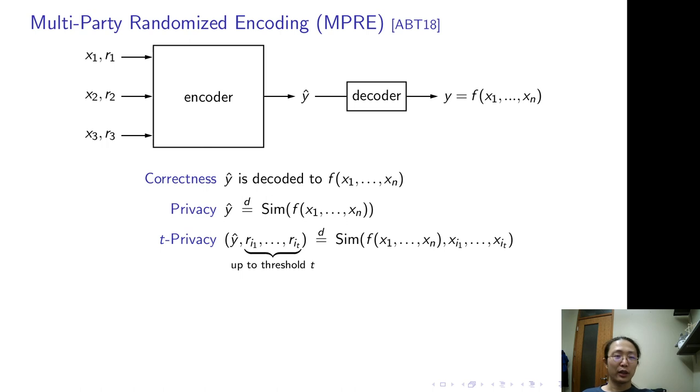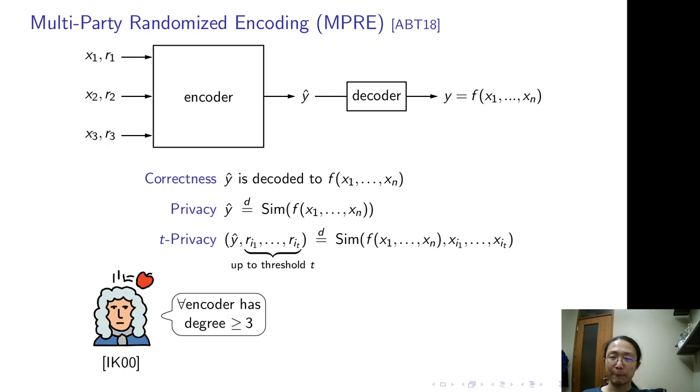We want to construct a round-optimal MPC, so we hope the encoder has low degree. Unfortunately, Ishai and Kushilevitz proved that the degree of the encoder has to be at least 3.